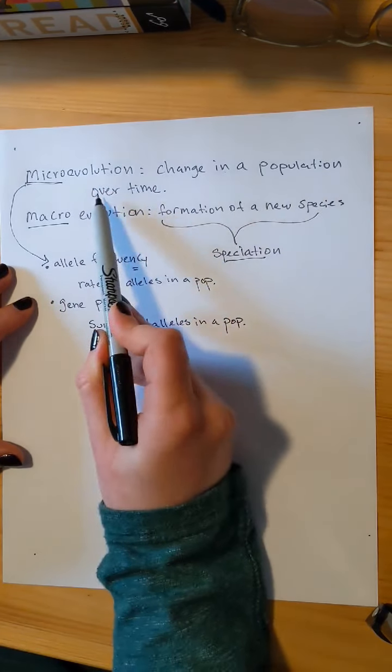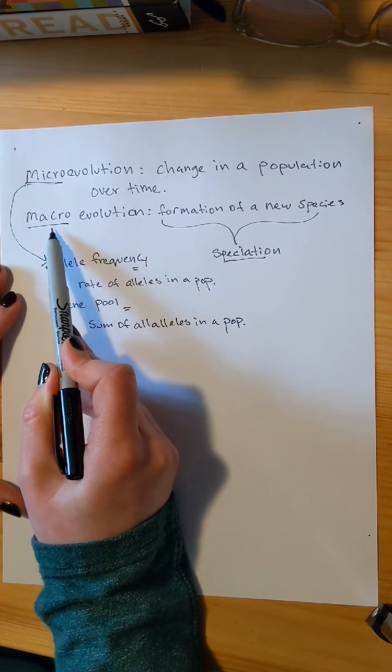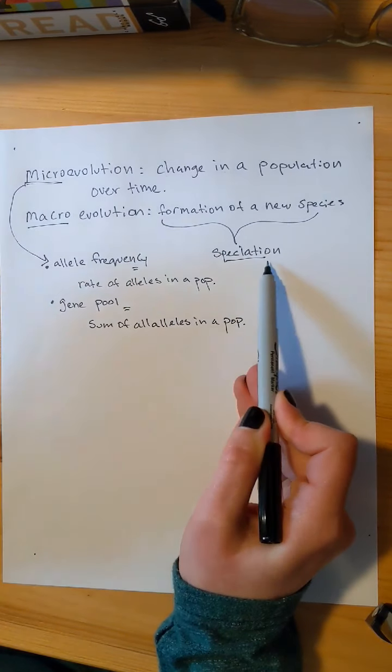So if frequency refers to the rate of alleles, the gene pool is the sum of all the alleles. So changing the gene pool and the allele frequency results in microevolution.